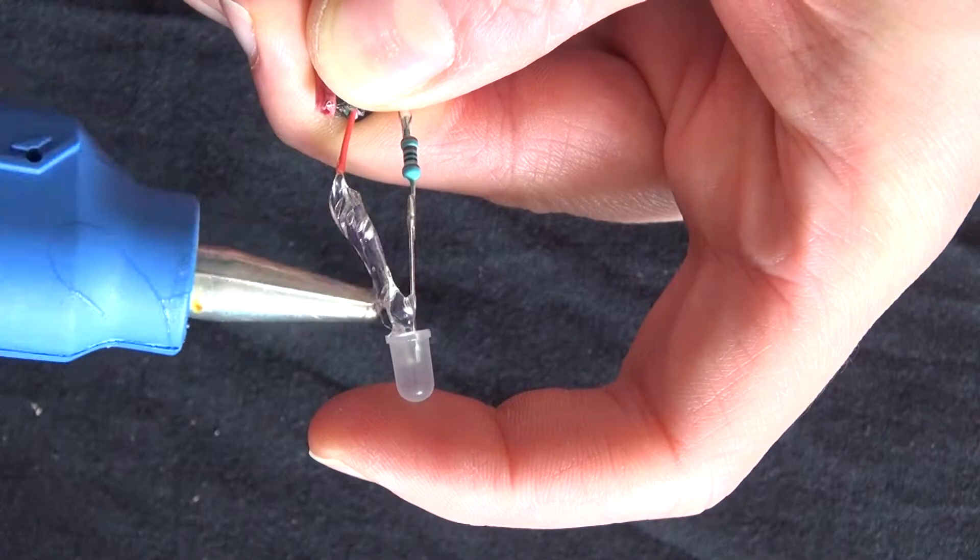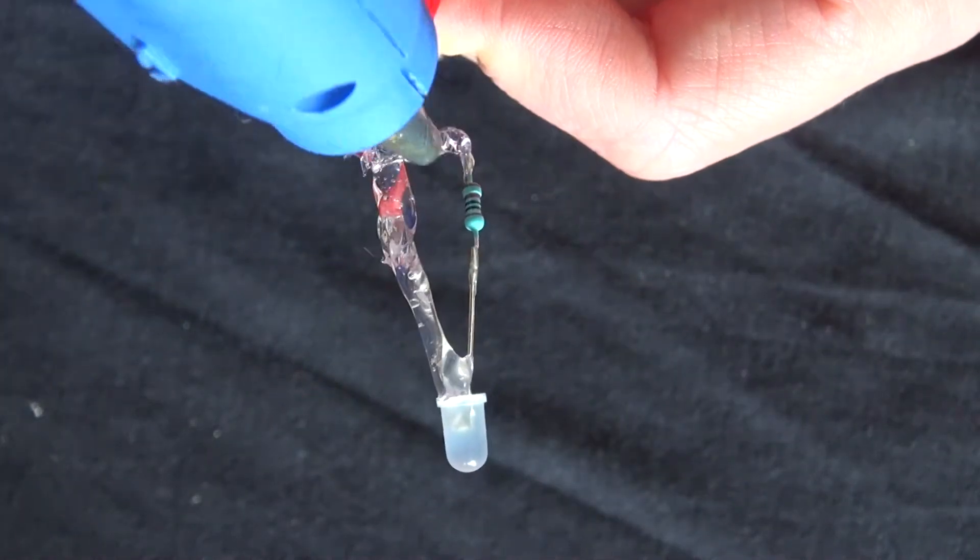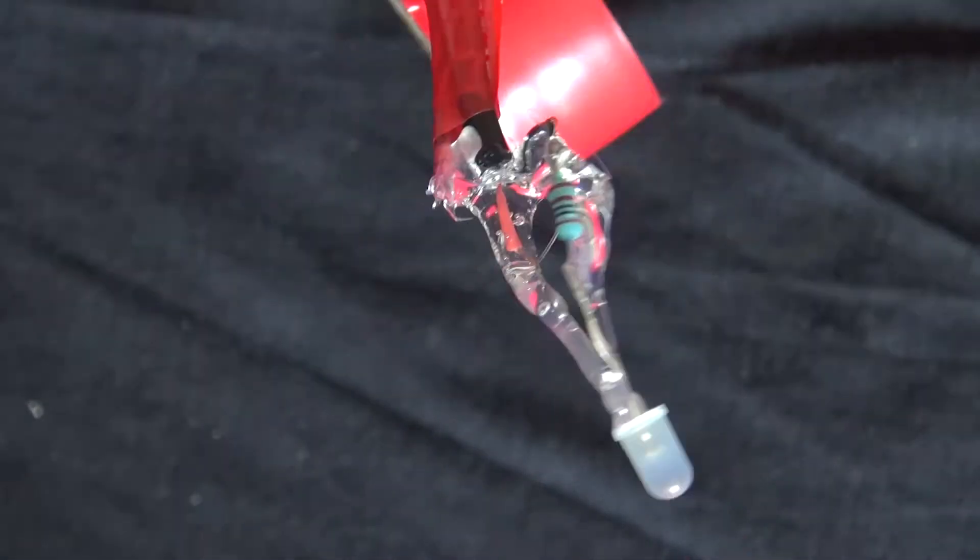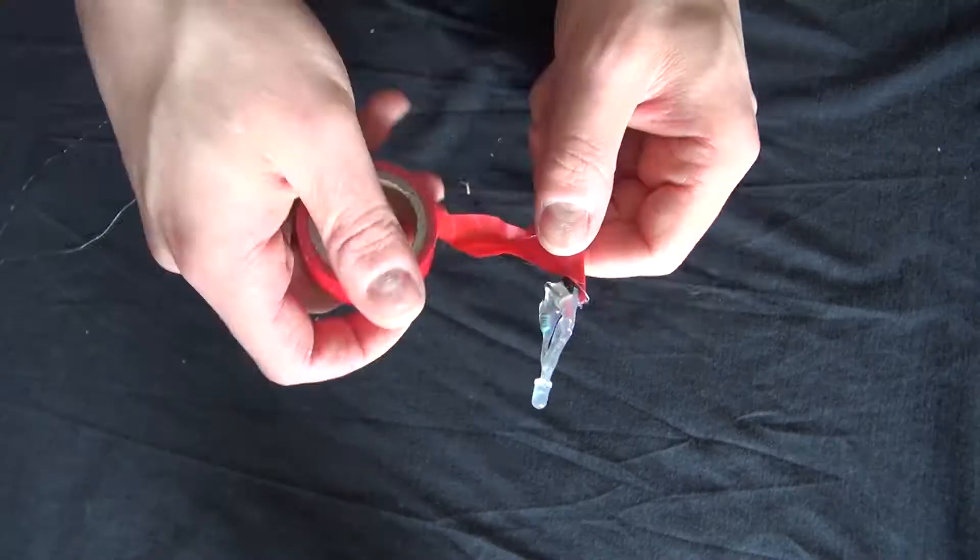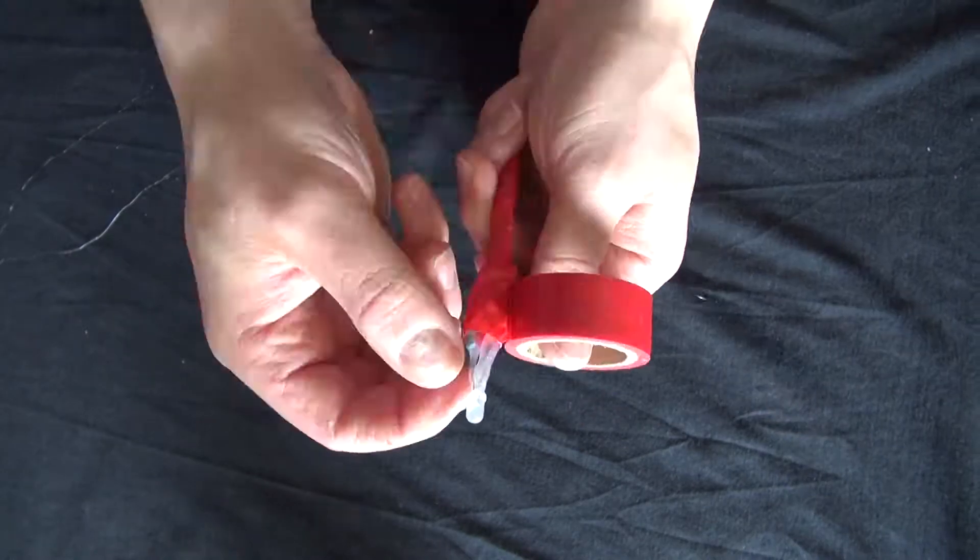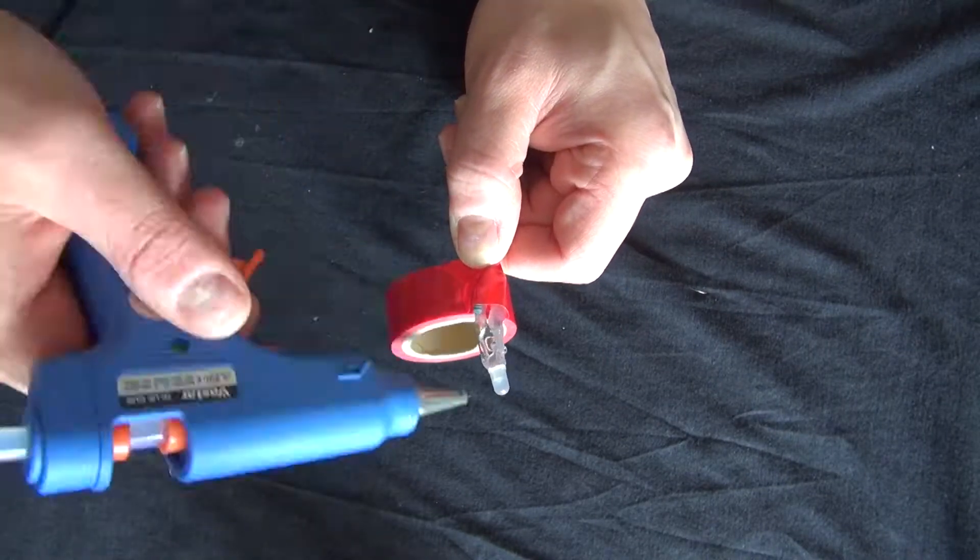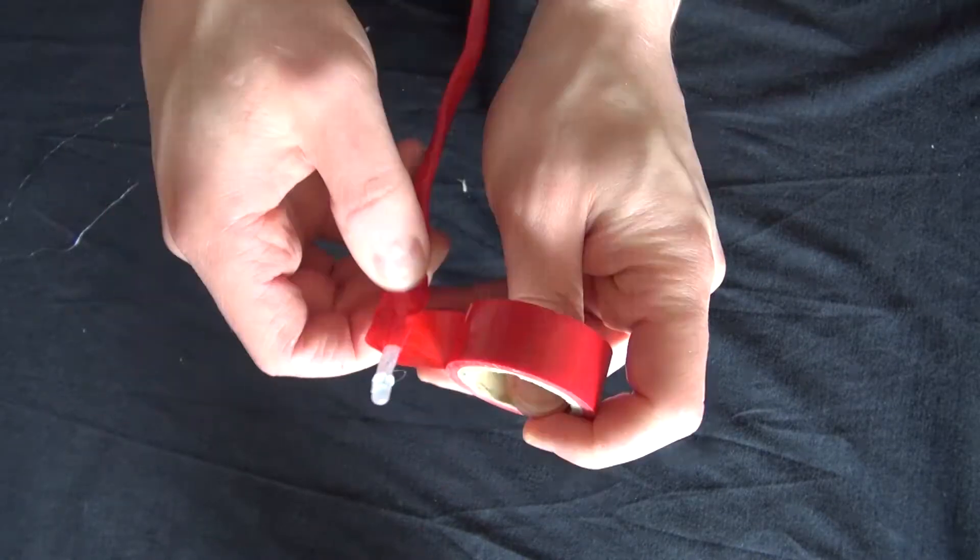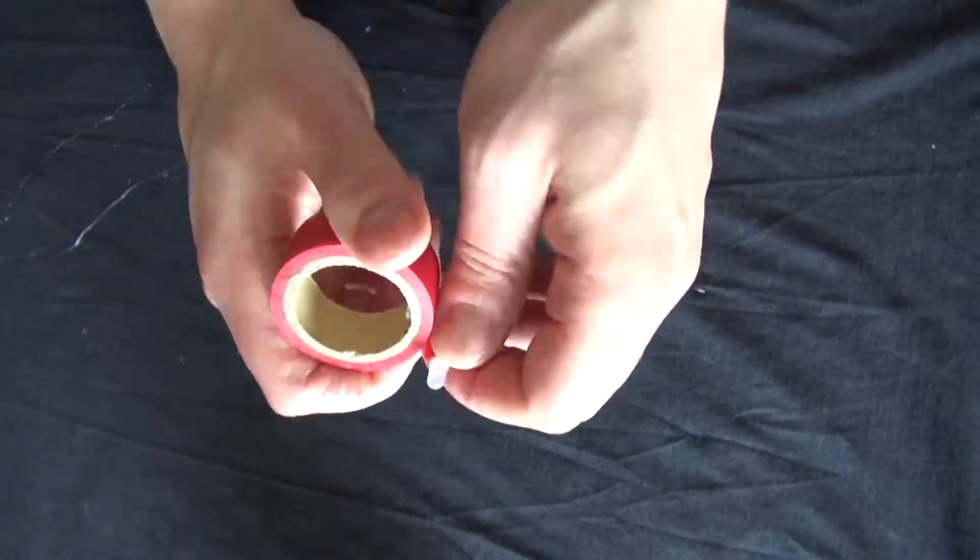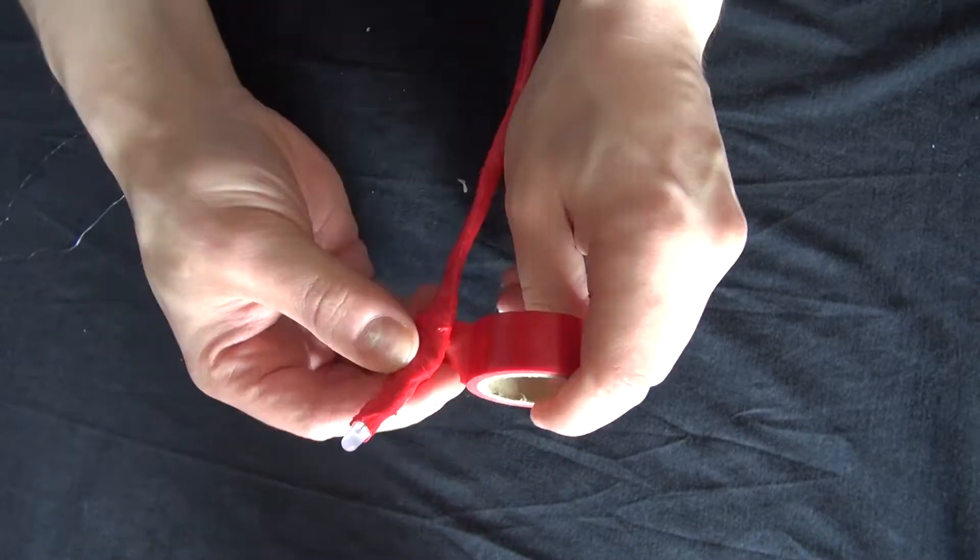Now put some hot glue over the wires and leads to prevent shorting and keep everything properly insulated. Then take some electrical tape and wrap it around that part too, so everything looks more even and nice.